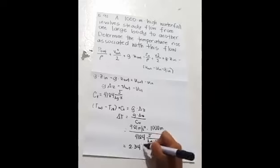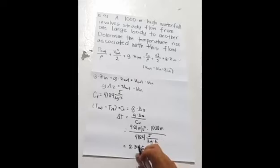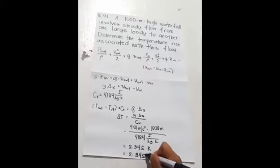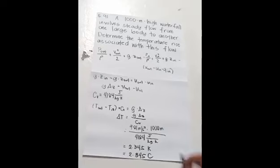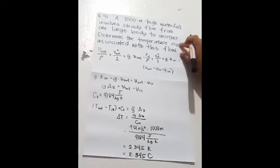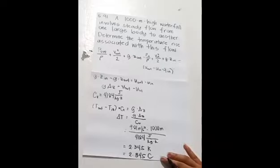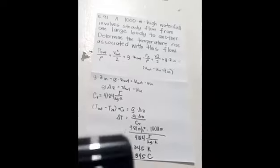And 2.345 Kelvin is equal to 2.345 degrees Celsius. So the temperature rise associated with this flow is 2.345 degrees Celsius. So that would be all, thank you.